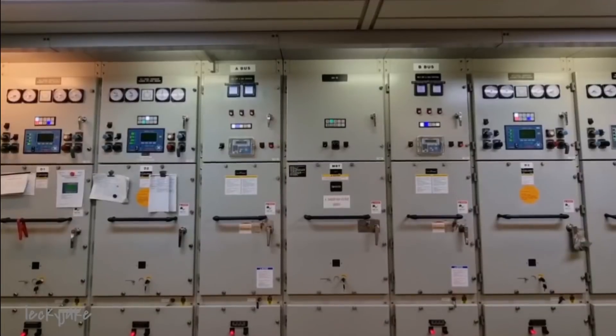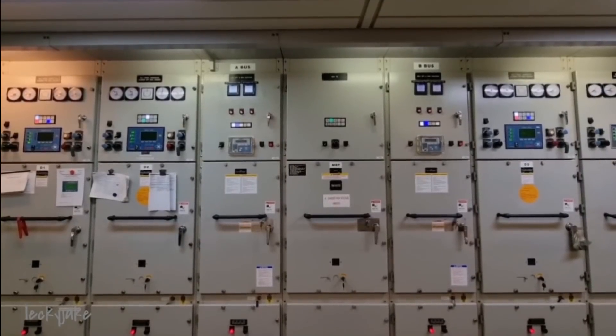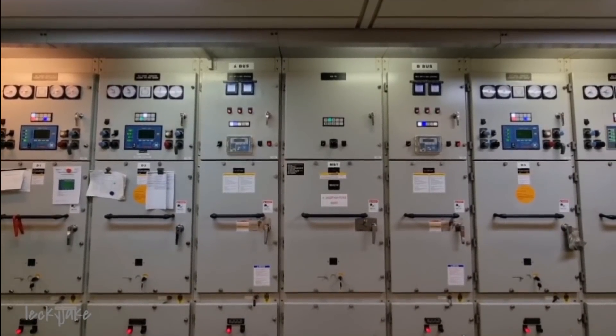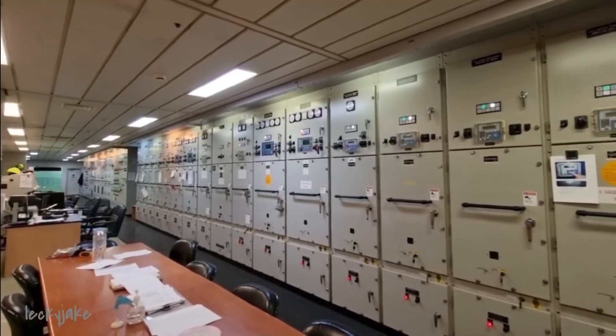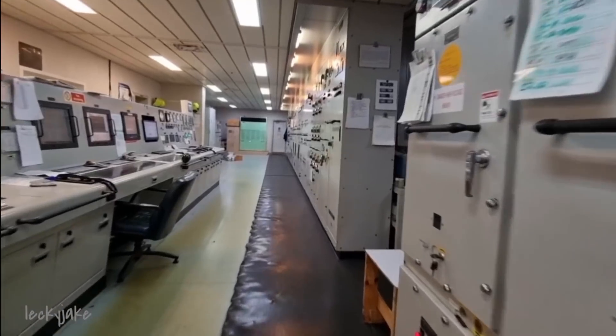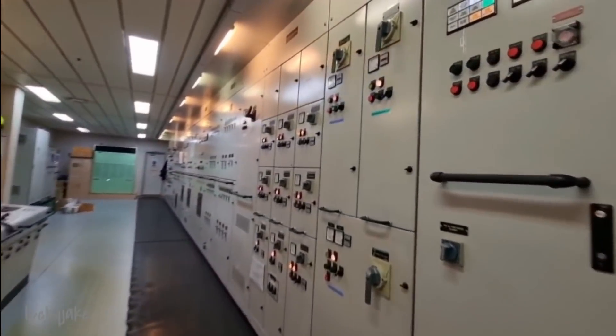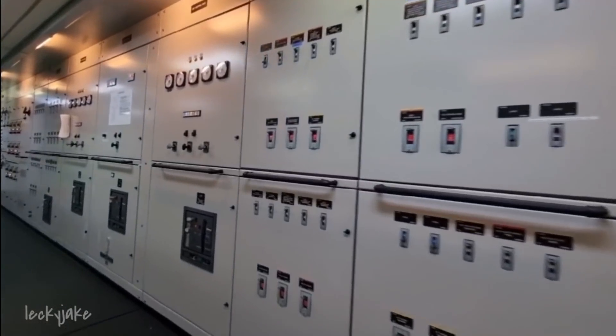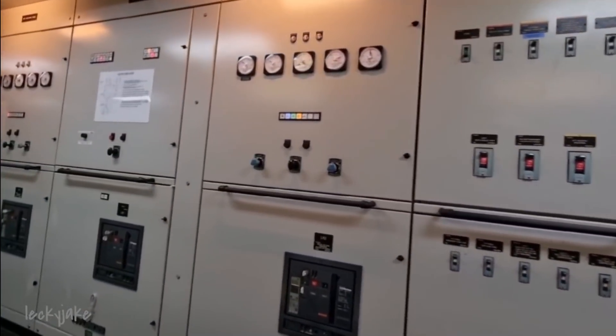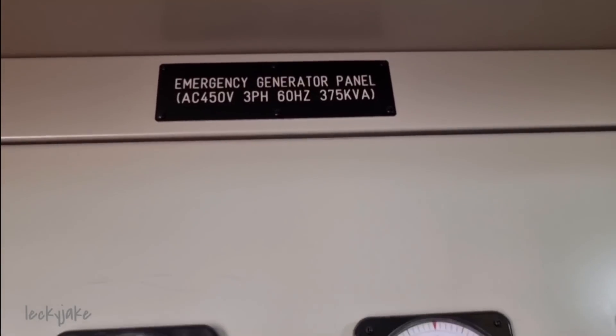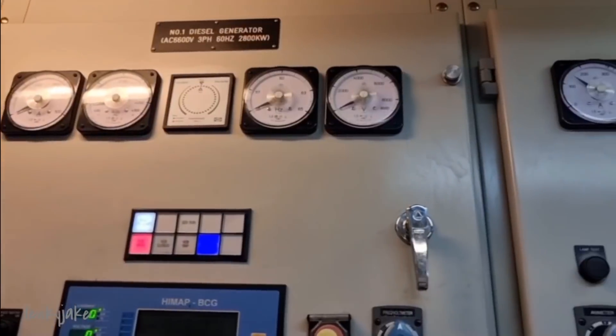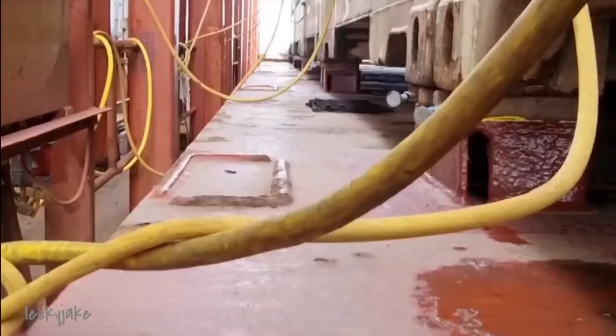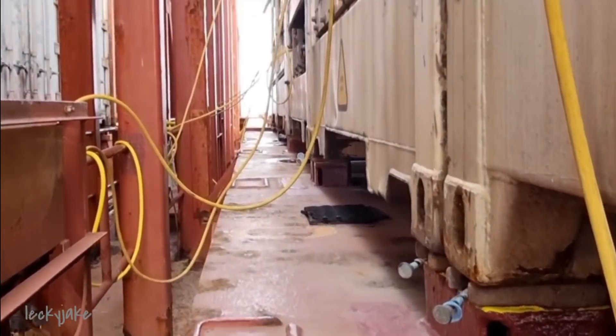The generators supply 6600 volts at 60 hertz to the main switchboard which is situated in the engine control room. The number of generators connected to the main switchboard at one time depends on the electrical consumer load of the ship at that time. The generators can be manually run up and connected to the main switchboard as required. But in normal operation, the automatic control system automatically controls the operation of the generators and major operational aspects of the main switchboard.